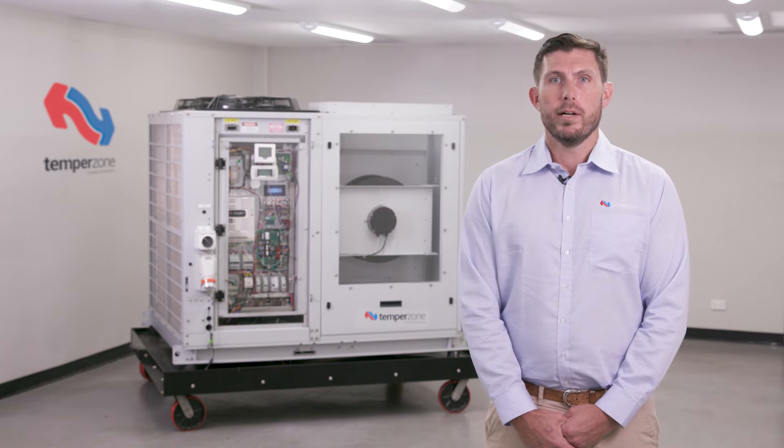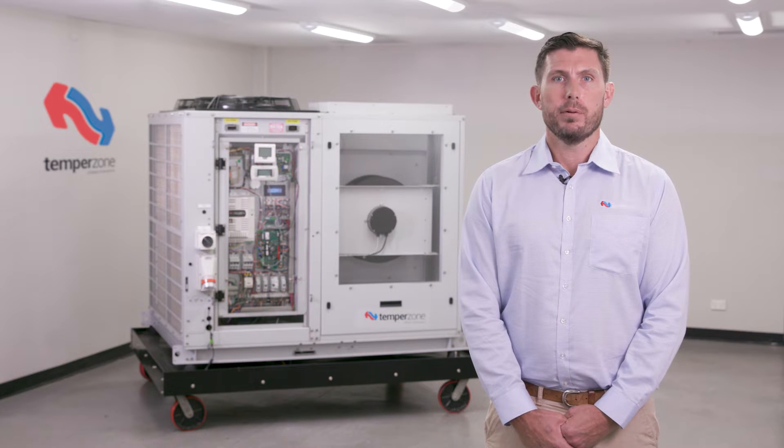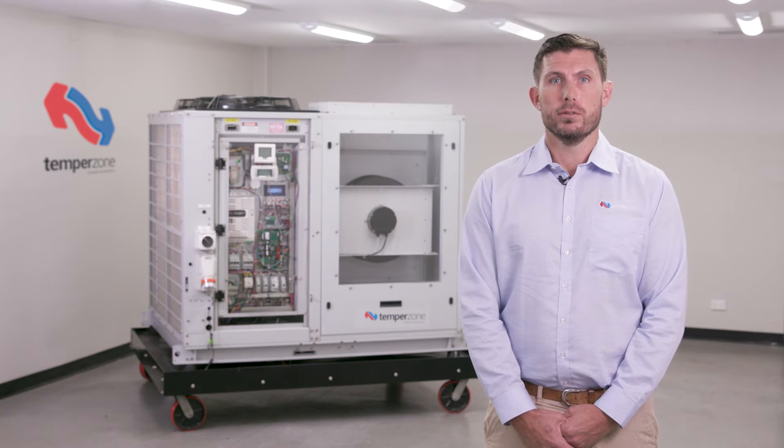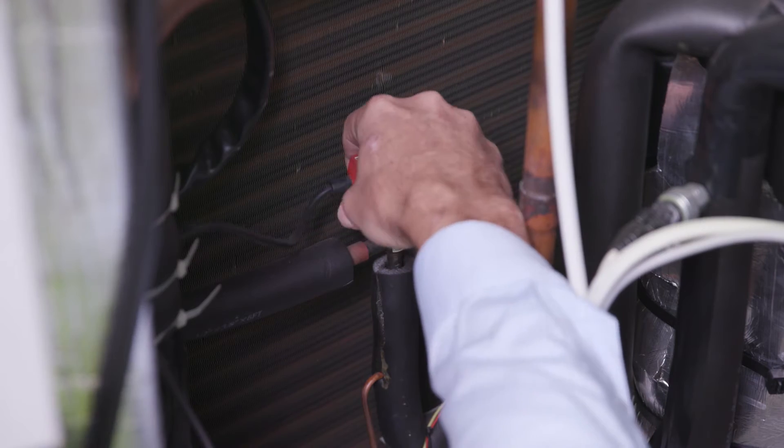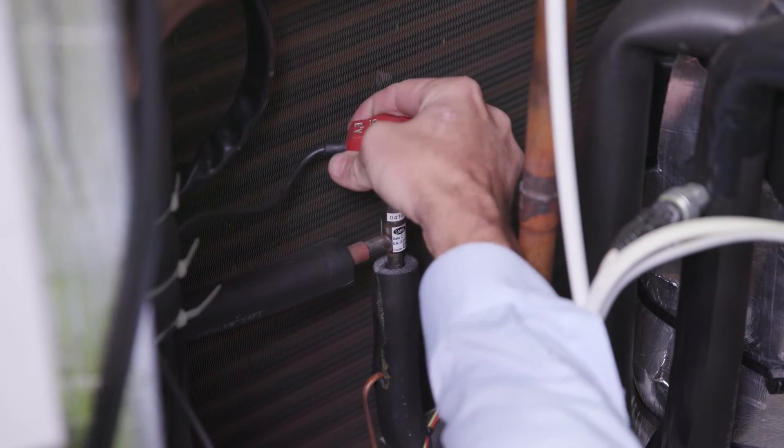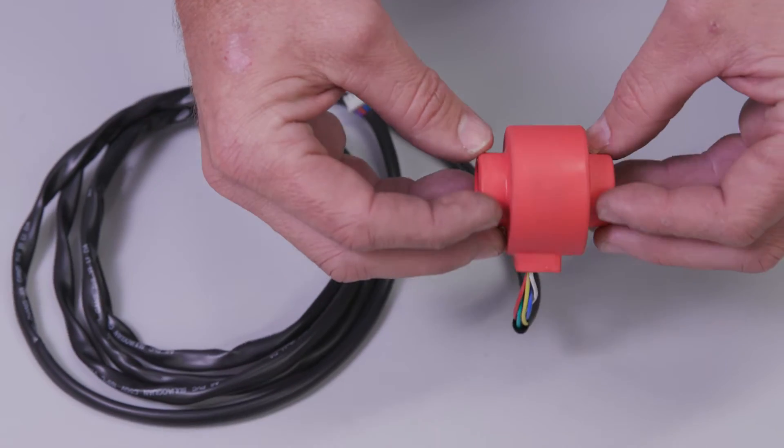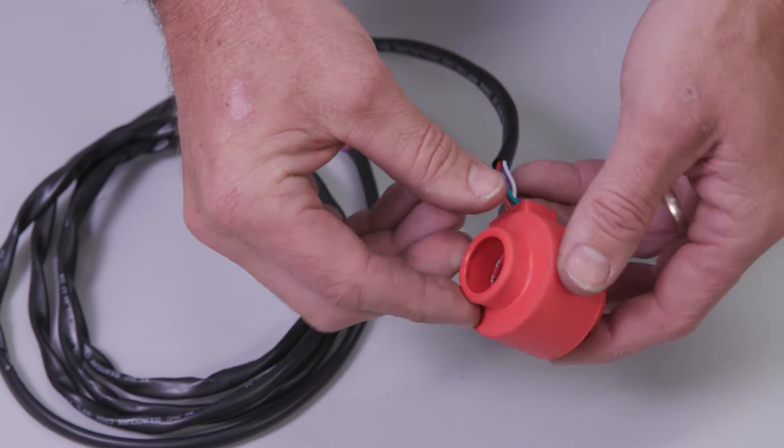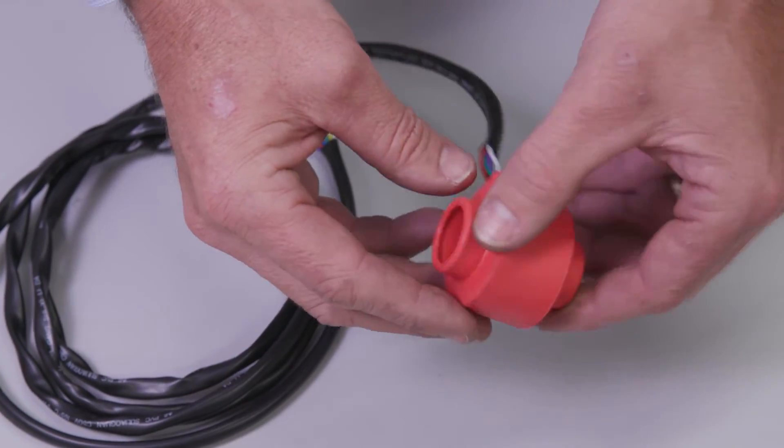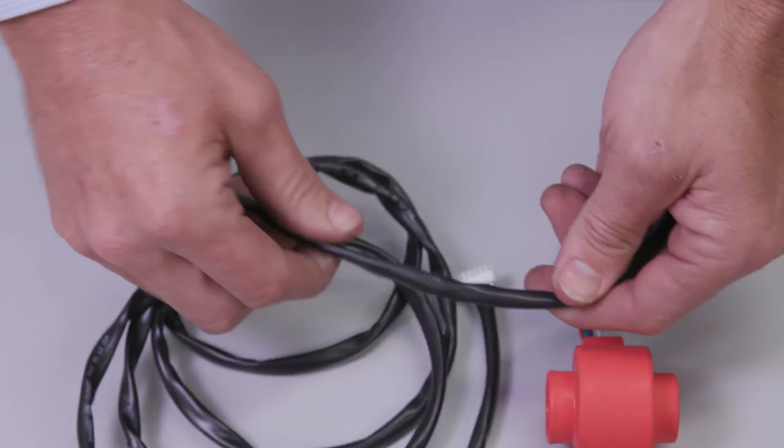EEV failure is a rare occurrence, and an EEV operating incorrectly is usually caused by external circumstances. Before diagnosing valve failure, be sure to investigate the condition of the valve motor, checking for signs of swelling and cracking in the outer casing, and making sure to also inspect motor leads for damage.